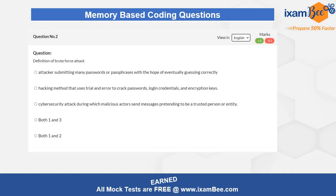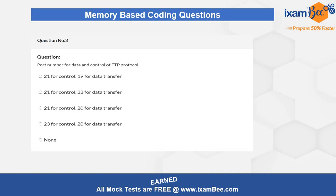For question two, the options include: attackers submitting many passwords; a hacking method that uses trial and error to crack passwords; or a cyber security attack during which malicious actors send messages pretending to be a trusted person or entity. You need to understand the actual essence of a brute force attack to identify the correct answer. Question three asks about the port numbers for FTP control and FTP data — FTP uses two different port numbers for its data and control protocols.